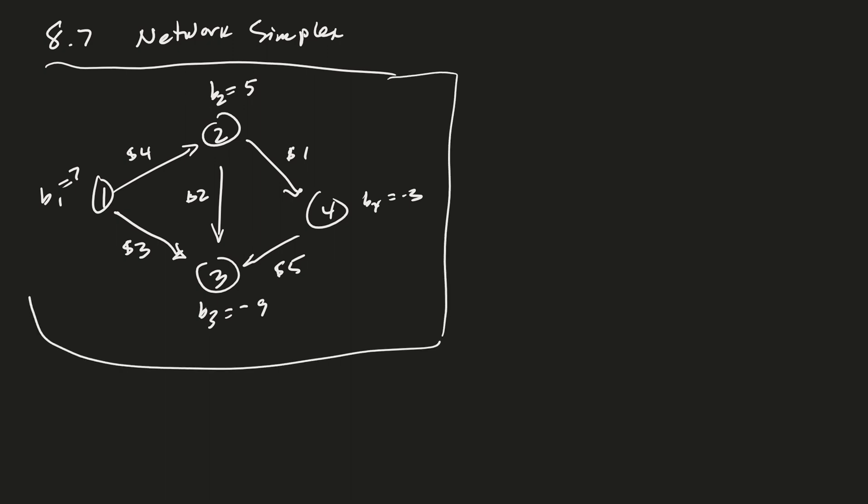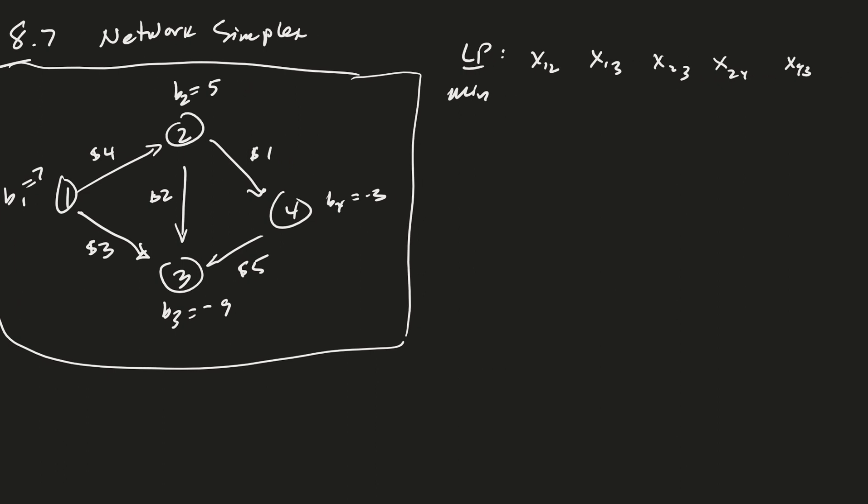I want to keep this original cost matrix around, so next to it I'm going to write down the LP for this problem. We're minimizing the cost, so I want to work with my variables in some order. The order will be x12, x13, x23, x24, and x43. I'm minimizing 4x12 plus 3x13, multiplying the cost by the flow. The cost for 23 is 2x23, 24 is 1x24, and x43 is 5x43.